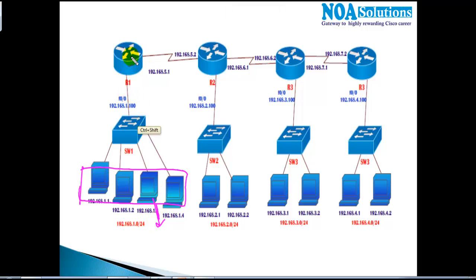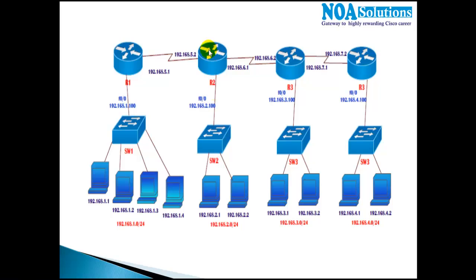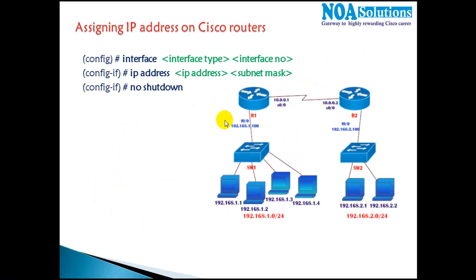Similar to PCs, we need to assign an IP address on the router as well. The question is how many IP addresses we need to assign — that depends on the number of interfaces. On router one, connecting two interfaces, we assign two IP addresses. On router two with three interfaces, we assign three IP addresses. On router three, three IP addresses, and on router four, two IP addresses. The number of IP addresses depends on the number of interfaces connected on that particular router.